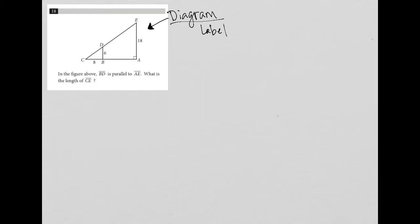This question says in the figure above, BD is parallel to AE. So I'm going to put my little parallel symbols as my labeling here. What does that mean? If those lines are parallel, then that means this angle must be 90 degrees because it corresponds to angle A there. It also tells me that these other angles are the same as well.